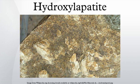Hydroxylapatite, also called hydroxyapatite, is a naturally occurring mineral form of calcium apatite with the formula Ca5, but is usually written Ca10 to denote that the crystal unit cell comprises two entities. Hydroxylapatite is the hydroxyl end-member of the complex apatite group. The OH ion can be replaced by fluoride, chloride, or carbonate, producing fluorapatite or chlorapatite.